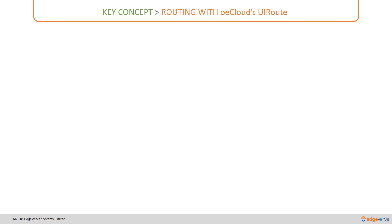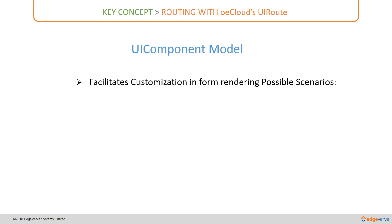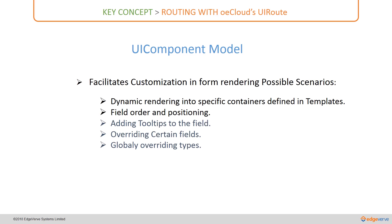This brings us to the next important question: how to handle customization while doing form rendering. There can be multiple scenarios where we would like facilitation from the OE cloud. One scenario involves templates with multiple containers — when dynamically rendering into containers, it looks for one container called 'fields' and renders all properties from the model into it. If a particular set of properties should go into one container and the rest into another, we need customization. The next scenario is field order and positioning.